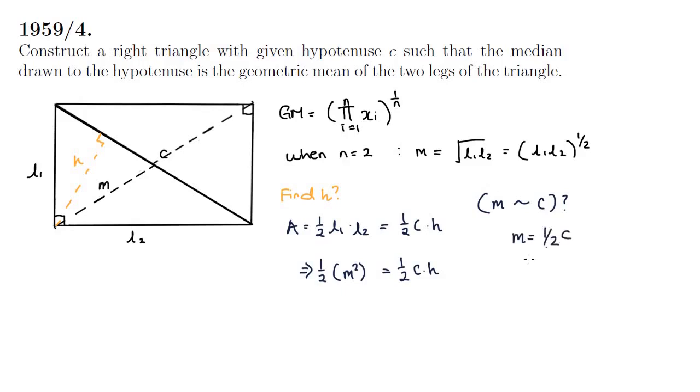So this is our relationship between m and c and when we substitute that back in we find a quarter c squared is equal to half c times h. And then finally we'll have our desired expression of h in terms of c which is h equals a quarter c.